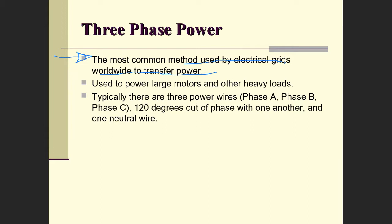Three-phase is typically used for high-power applications — large motors and any application requiring heavy loads. With three-phase power, we typically have a physical configuration that requires three power wires, one for each phase: phase A, B, and C. They are 120 degrees out of phase with one another. In addition to the three power wires, there is also a fourth wire, which is the neutral wire.